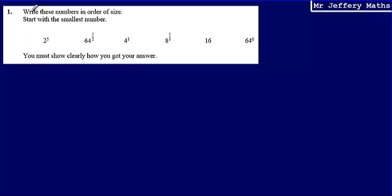This is question 1. We're asked to write these numbers in order of size, starting with the smallest number. We're also asked to show clearly how we got our answer. So in order to do this, let's first start writing these out.